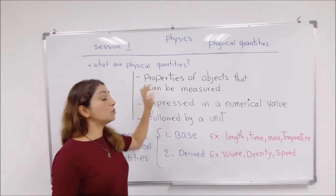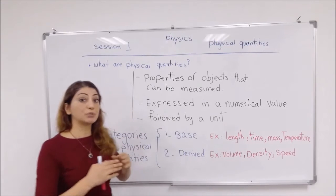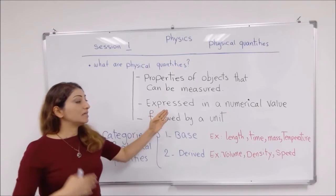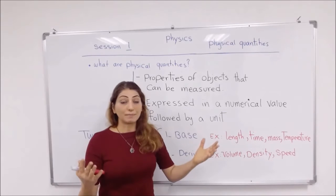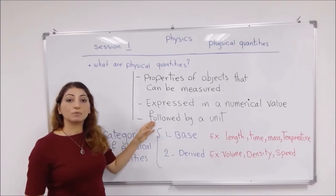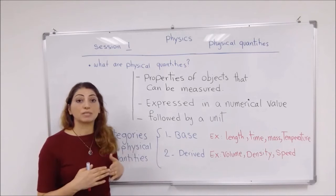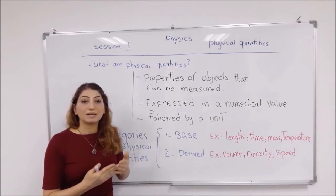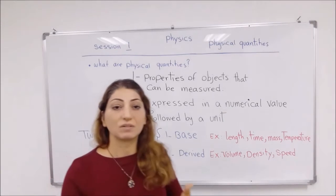Physical quantities are those properties of objects that can be measured by using a proper tool or instrument, and they can be expressed in a numerical value, or a numerical value can be used to be expressed, and then followed by a proper unit. So we use a proper unit after the numerical value to express our measurement of that physical quantity.